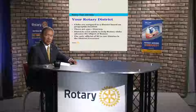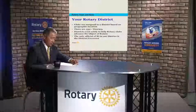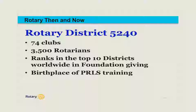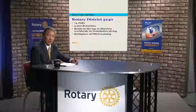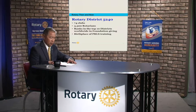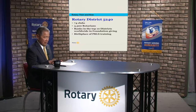A district governor is the only person who is the official officer of the corporation of Rotary International. Rotary District 5240 consists of 74 clubs covering Ventura County, Santa Barbara County, San Luis Obispo County, and Kern County. There are about 3,500 Rotarians and it is ranked within the top 10 districts in the world, not only in foundation giving but also in education. It is also the birthplace of PEARLS training — Practical Relevant Leadership Skills — developed in our district to help clubs become more efficient through leadership programs.